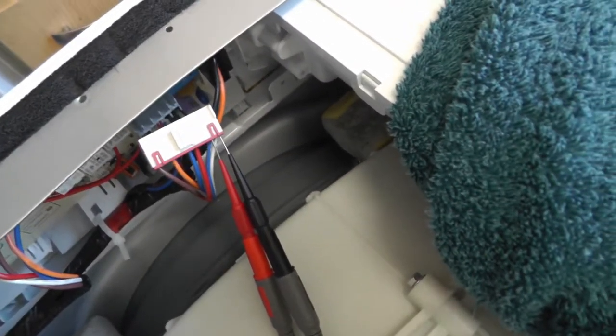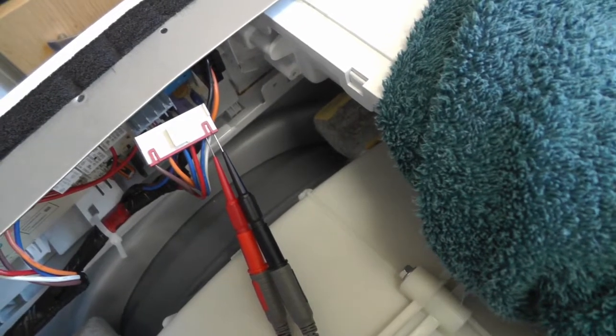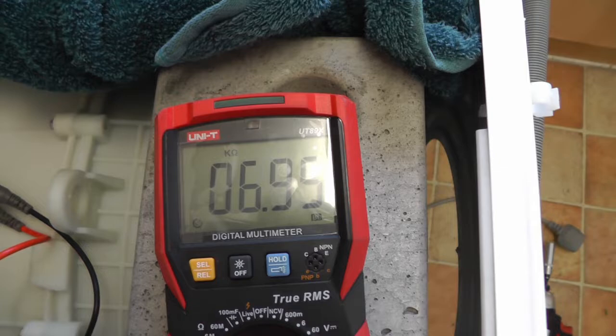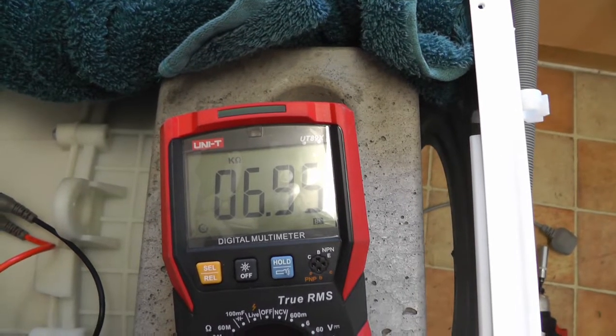So I've tracked the wiring back up, it was a white and a blue wire from the thermistor up to the PCB board and that's giving 6.9 kilo ohms.